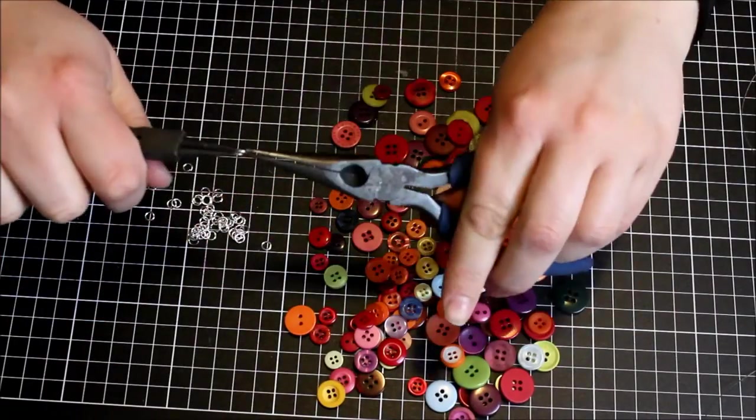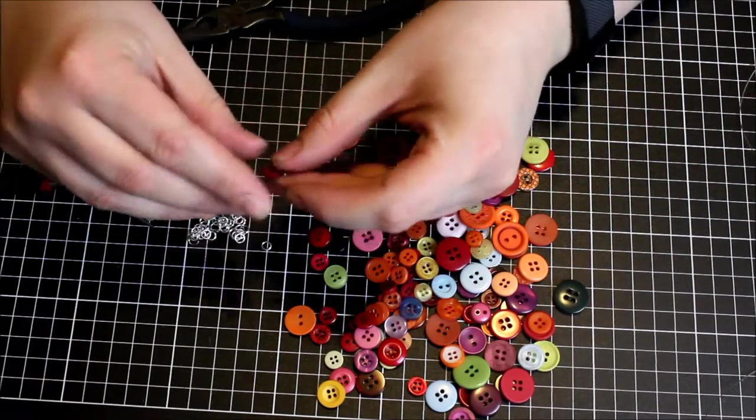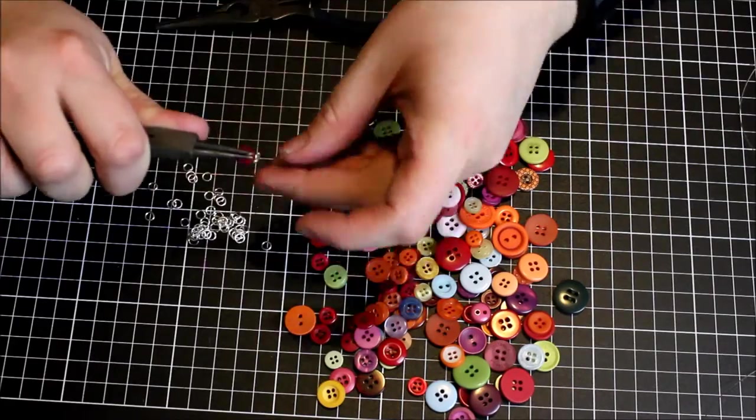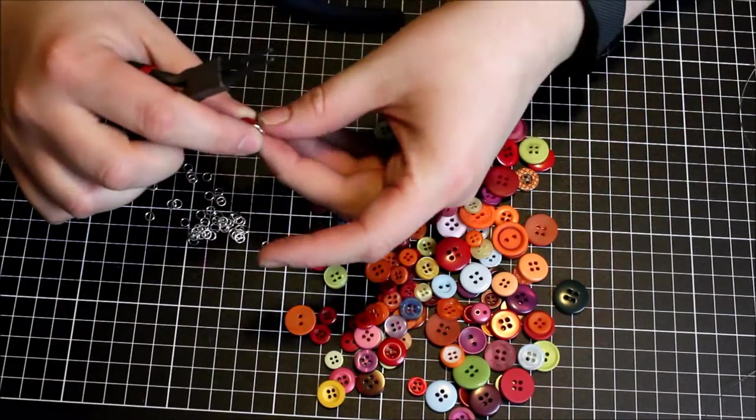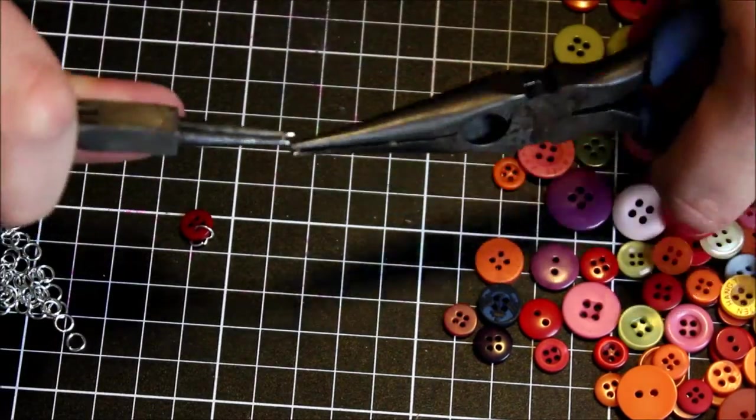To actually build your necklace you'll need to find these tiny little circle findings that you can open up and then close again so that you can attach these to your buttons by opening it up and hooking it through one of the holes of your buttons.